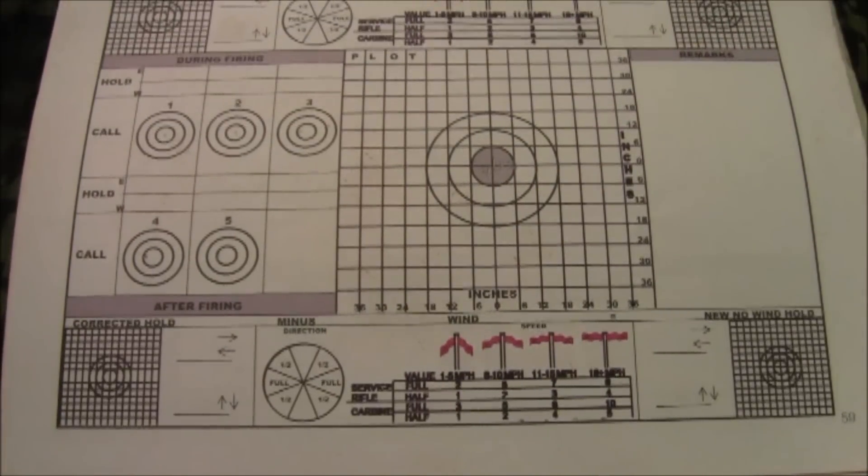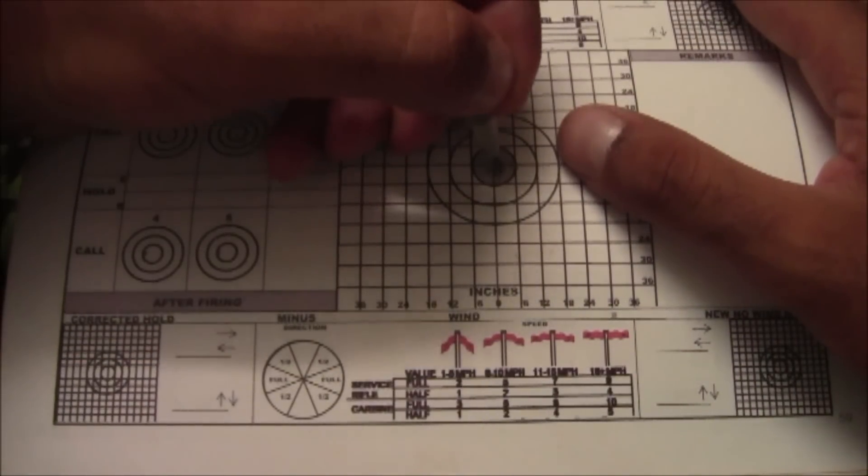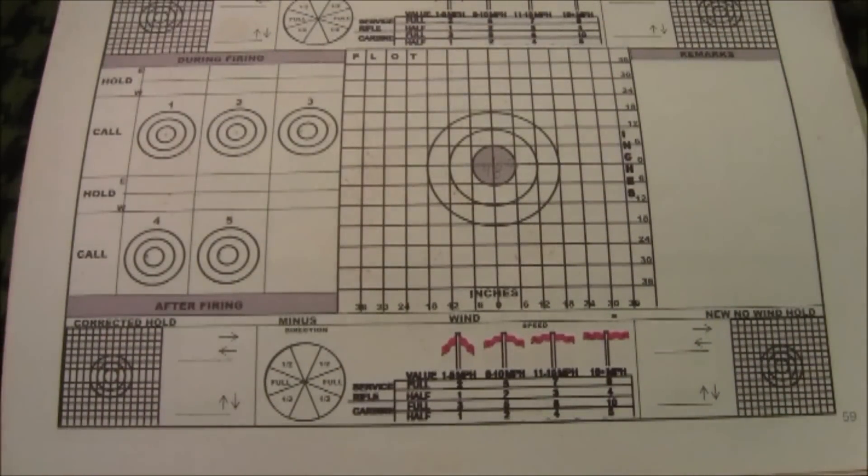Now the string of fire's over, I can get out of my position, take the sling off, whatever. I see my fifth shot was in the center. So that's how that works.